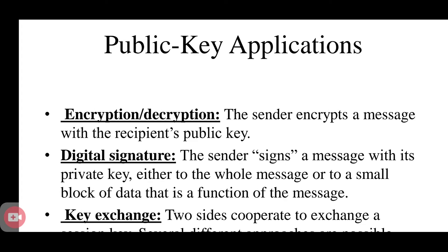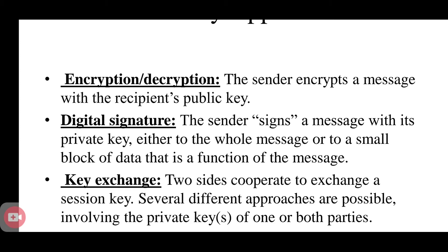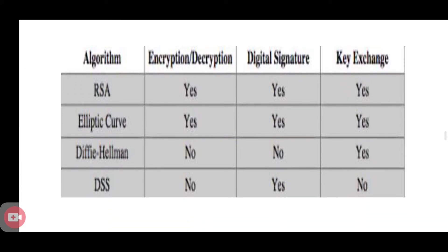The main three applications of public key cryptography are: encryption and decryption, digital signature, and key exchange mechanism. RSA and Elliptic Curve are used for all three applications. Diffie-Hellman is used only for key exchange, and DSS (Digital Signature Standard) is used only for digital signatures.